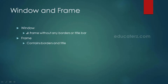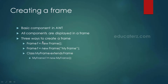A window is nothing but a frame without any borders or title bar, whereas a frame contains borders and a title bar. A frame is basically a component in AWT. Whenever we want to display components like push buttons, radio buttons, or check boxes, all these components are displayed in a frame. So we need a frame first of all, which is a very basic component in AWT.